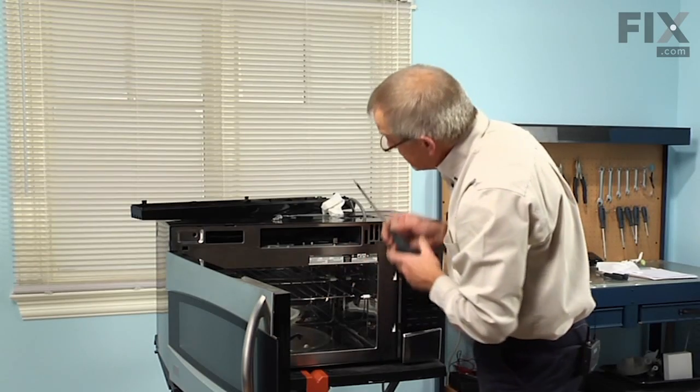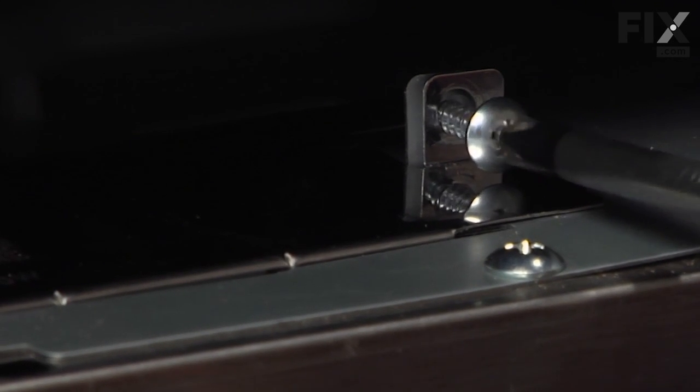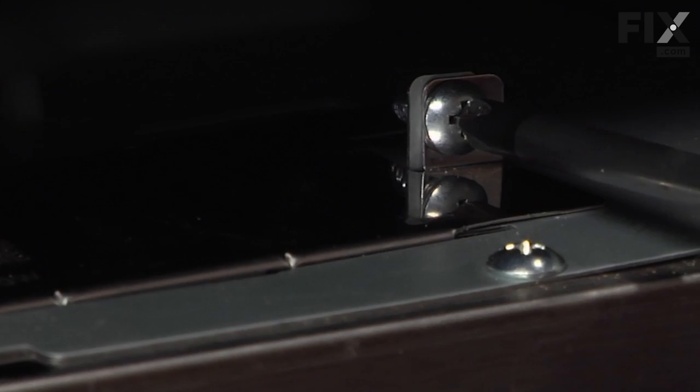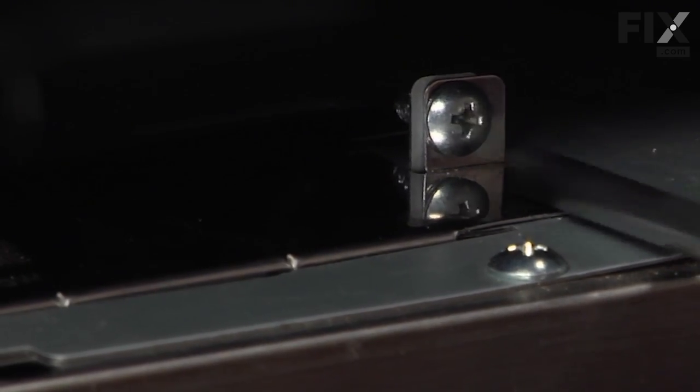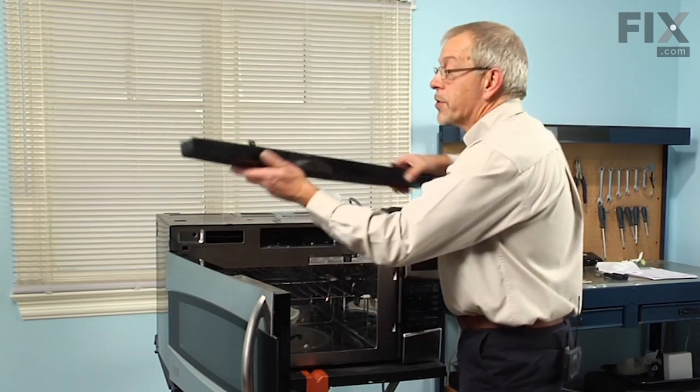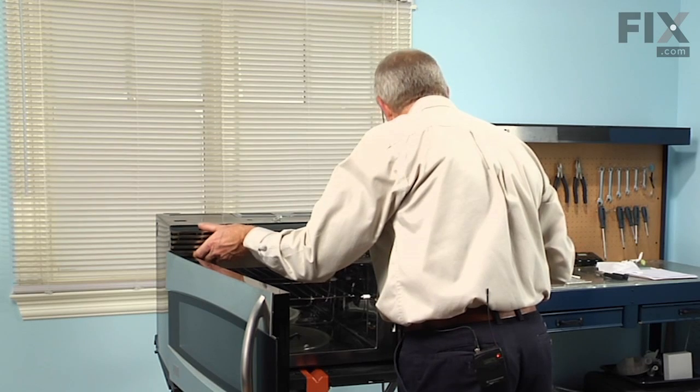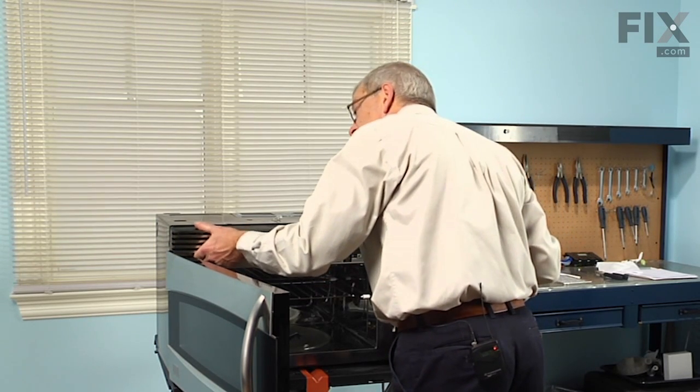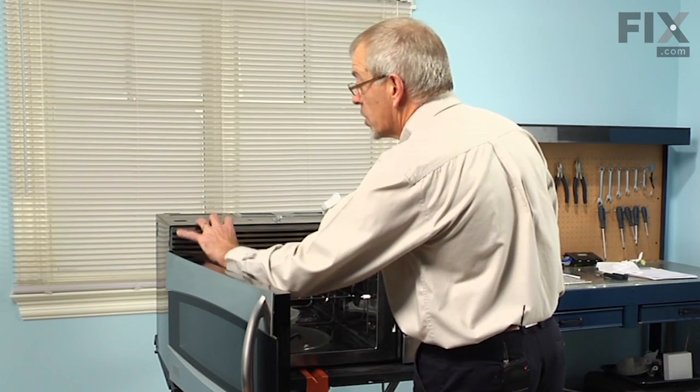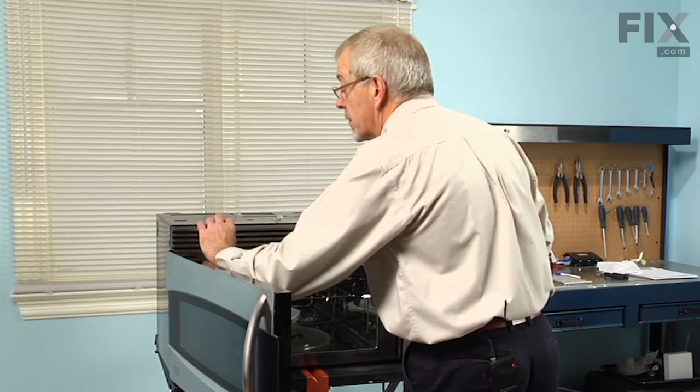Drop it into place, secure it with the one screw, and we're ready to put the grill back on. Line up the tabs with the slots on the cabinet, and the two top tabs we have to tuck under the edge of the top of the cabinet.